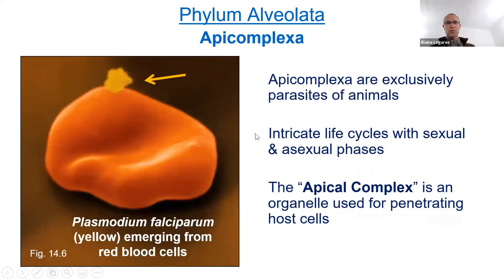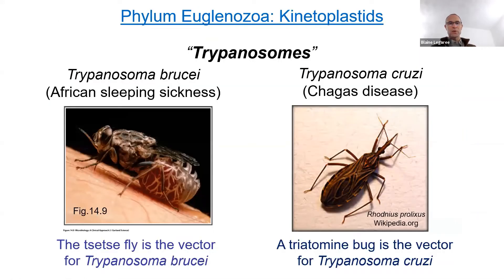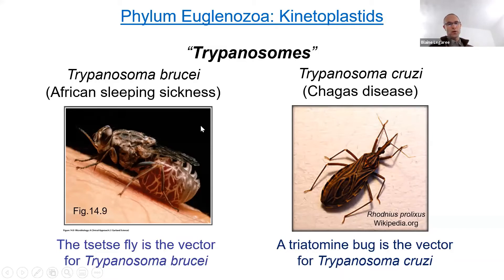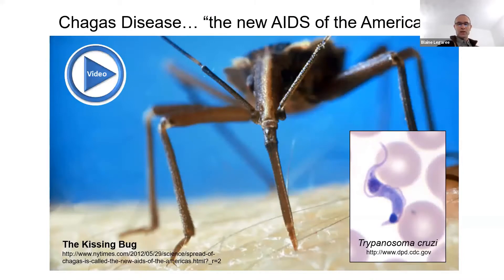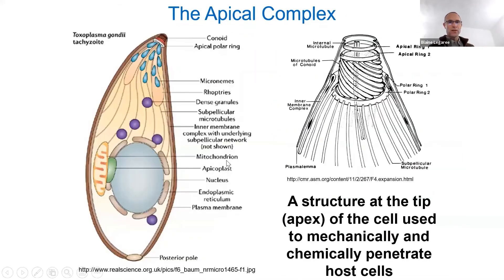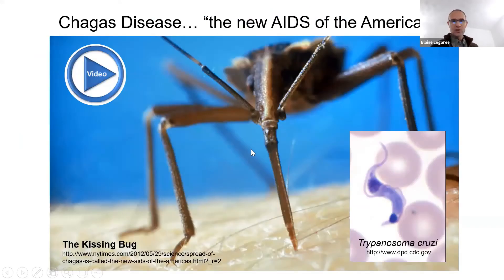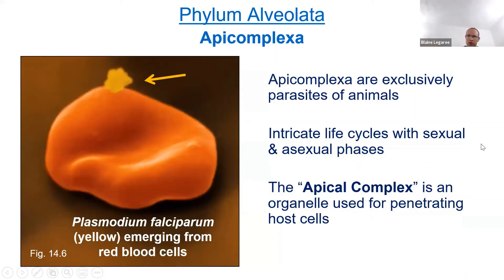Chagas disease and African sleeping sickness are not Canadian diseases other than cases imported from travelers, but they're important geographically and are examples of vector-borne diseases — spread by some sort of insect or arthropod. There is one disease that is much more important than these. I want to shift and talk about malaria, which is arguably much more important than both African sleeping sickness and Chagas disease.